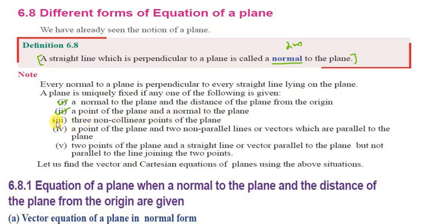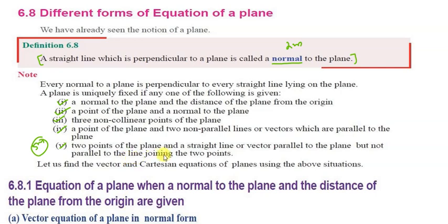Next we will see forms 3, 4, and 5, which carry 5 marks. Form 3 uses three non-collinear points of the plane. Form 4 uses a point on the plane and two non-parallel vectors parallel to the plane. Form 5 uses two points on the plane and a straight line vector parallel to the plane but not parallel to the line joining the two points.